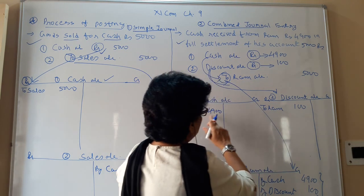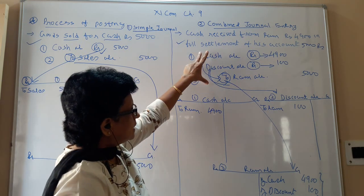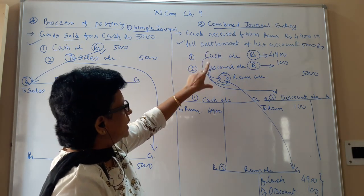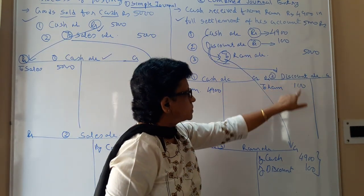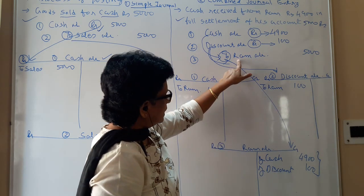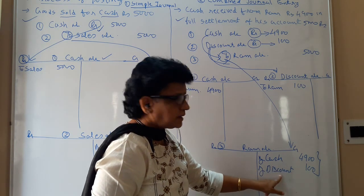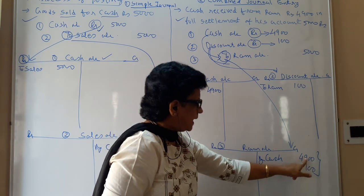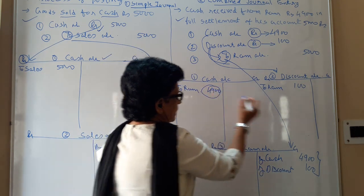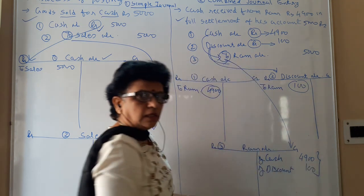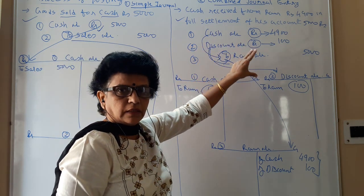And debit also you have total debit effect of 5,000. So in this manner, in combined journal, what you have done? The two accounts which are debited, do the posting on respective side of those two accounts on the debit side. And the one account which is credited, for that one account, the opposite accounts are two: by cash and by discount. Make sure that ultimate effect of debit should be 5,000 and credit should be 5,000. So in this manner, the process of posting is to be done. Thank you.